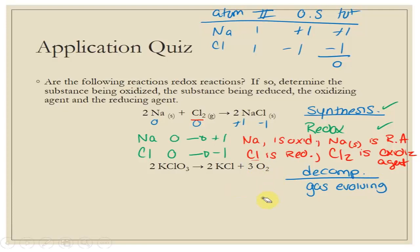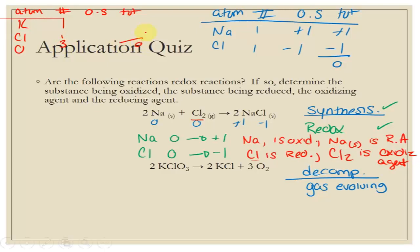For KClO₃, I'll set up a table: atom, number, oxidation state, total — for K, Cl, and O with counts 1, 1, 3. The total must add up to zero. K is not an exception, so it's plus one. Oxygen in a compound is always minus two; three times minus two is minus six. To make everything sum to zero: plus one plus Cl's oxidation state plus (minus six) equals zero, so Cl must be plus five.